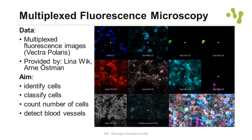The data that I based this introduction on is a multiplex fluorescence dataset, meaning we have 10 channels. One of these is the nuclei — standard DAPI — from a tissue core from a tumor tissue. Then we have eight markers that characterize the cells, so the absence or presence of these markers characterizes the class of the cells. What we are interested in is identifying and classifying the cells, counting them, and additionally detecting blood vessels in this tissue.